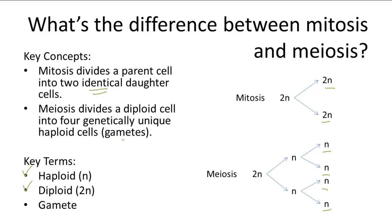And these haploid cells are also called gametes, genetically unique gametes.